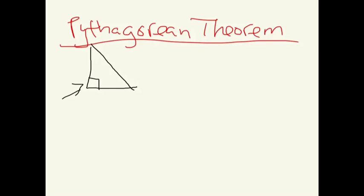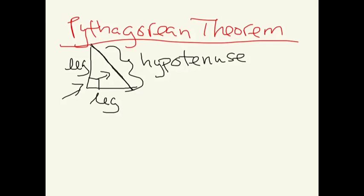When you have a right triangle, you need to be sure to know the names of each side. So this side is called a leg. This side is also called a leg. But the longest side, the side opposite the right angle, has a big name and it's called the hypotenuse. Big name for the longest side of a right triangle.